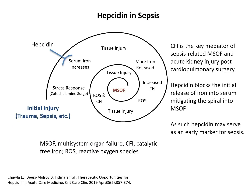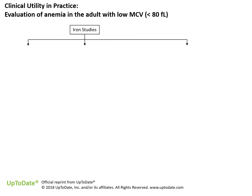Iron plays a major role in the systemic organ failure associated with sepsis. As tissue is damaged by infection and the subsequent overactive immune response, iron is released beyond a level the body can control. This leads to the presence of catalytic free iron, which then causes the formation of reactive oxygen species. The oxidative damage to cell membranes that ensues causes further tissue damage, creating a spiraling condition eventually leading to multi-system organ failure. With hepcidin's role in sequestering iron in conditions of inflammation and iron overload, it may serve as an early acute phase marker of sepsis.